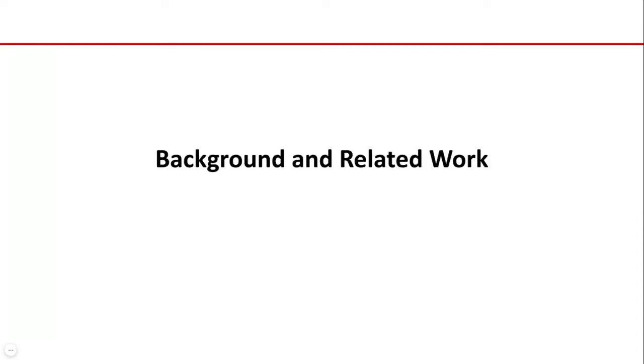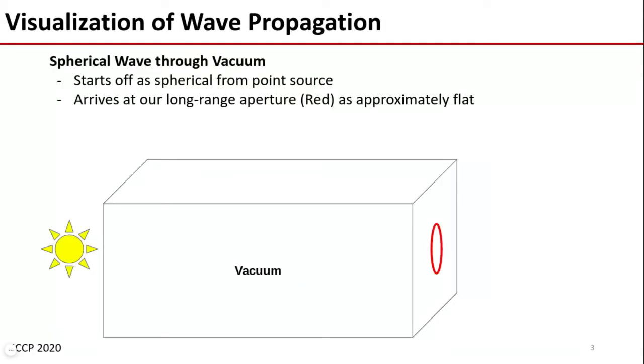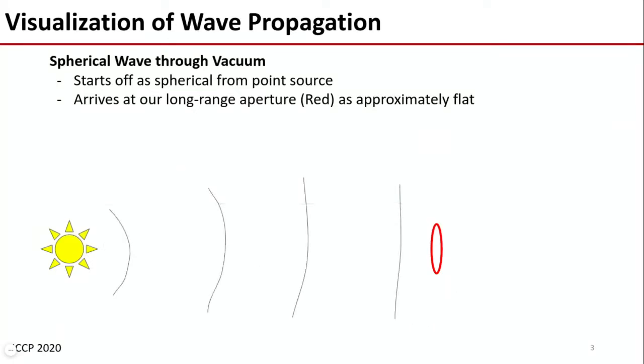So to begin, let's take a look at the background and related work. We are primarily concerned with what happens as light propagates through the atmosphere. In a vacuum, a pulse of light will originate at the source and spherically propagate outwards until it eventually lands on our aperture in red. Since we are typically talking about long ranges in this work, as is the case with most turbulence works, we consider the wave to arrive at our aperture roughly flat.